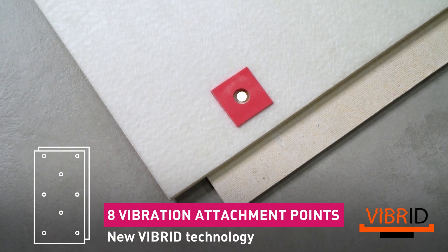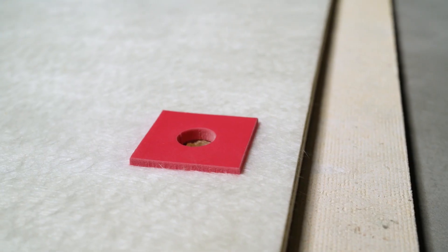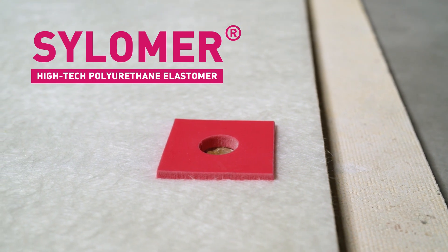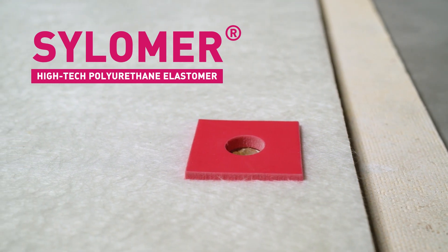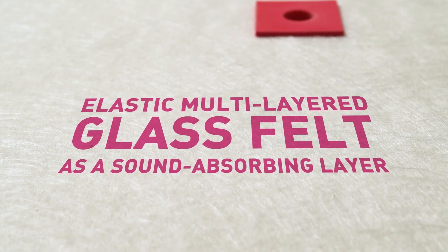Zip Slim has eight vibration attachment points made using the new Vibrid technology to enhance sound insulation. The panel and wall are separated by vibration dampers made of Silamer material. Elastic multi-layered glass felt is used as the sound absorbing layer.